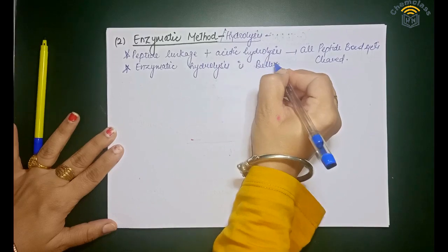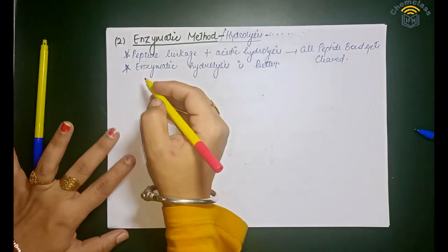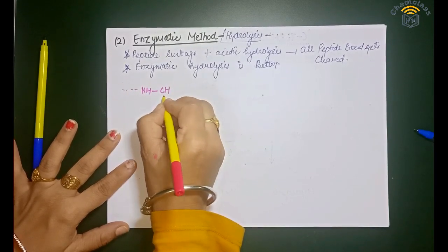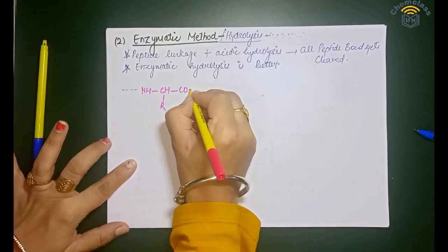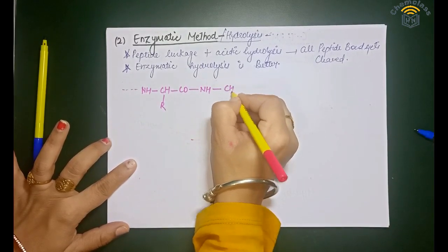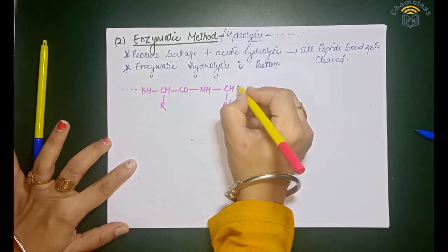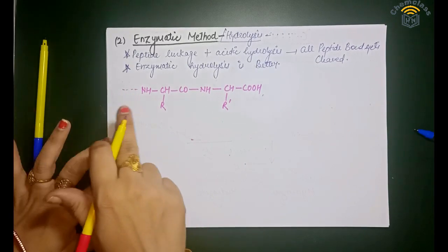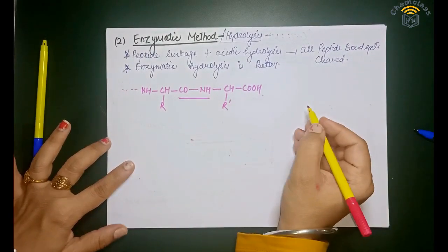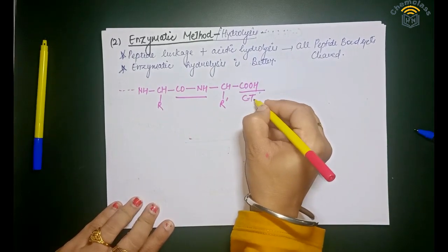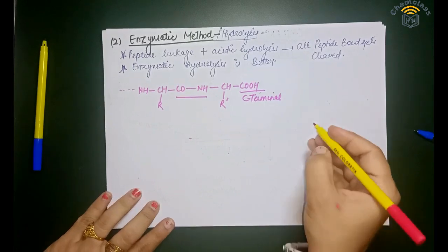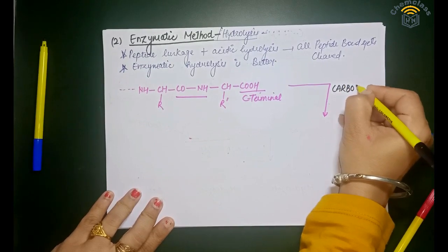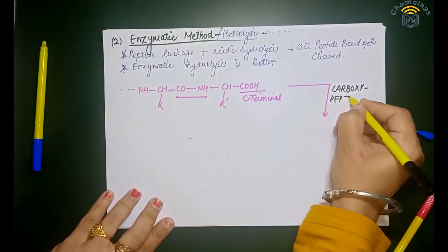Enzymatic hydrolysis is better. In this method, we take a long chain of amino acids with peptide bond linkages — CO-NH-CHR-COOH — and this is our C-terminal. We select one enzyme — carboxypeptidase — which is obtained from the pancreas, and we carry out hydrolysis in its presence.